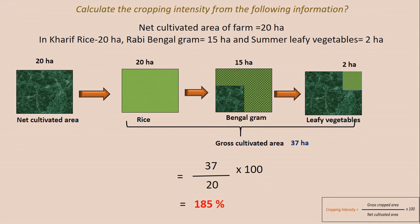In this way we can calculate cropping intensity by knowing the gross cultivated area or gross cropped area. We also have to remember whether the problem is given in hectares, acres, or meters and convert accordingly. That's all folks — this is Hagristarji. Thank you all for going through these problems. If you have any doubts, please comment in the comment section.